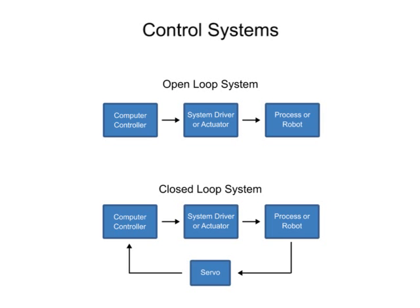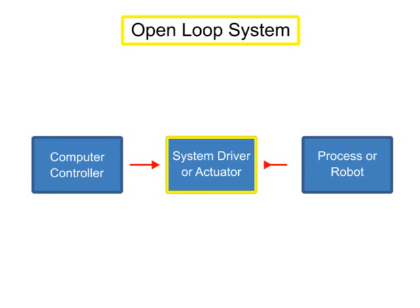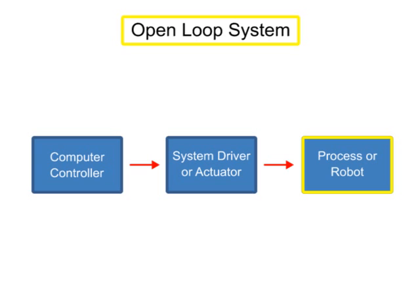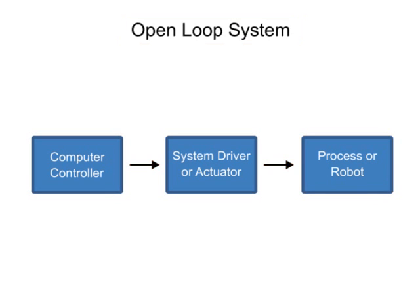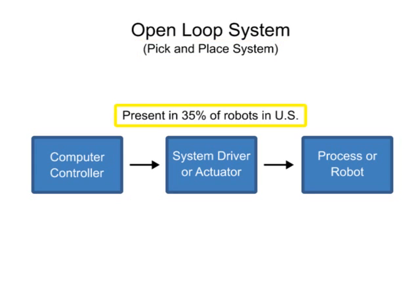There are different types of control systems used in robotics. In open-loop control, the computer sends signals based on the current state without taking into account feedback from the system. This type of system is also called non-servo, or pick and place, and is used in about 35% of the robots in the United States.